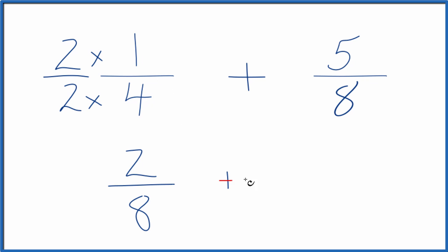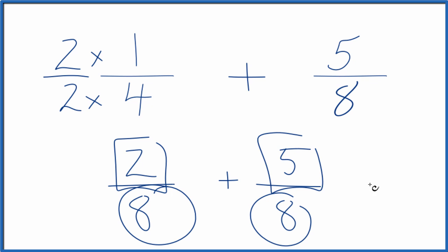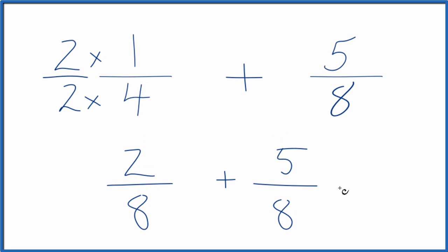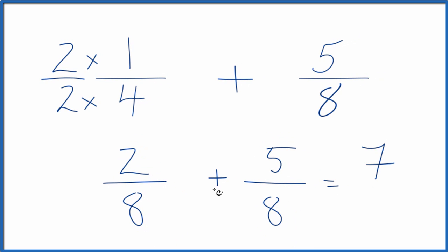But now I could just bring the 5/8 down. And since the denominators are the same, I can just add the numerators. So 2 plus 5 equals 7. And then we just bring the 8 across, 7/8. So 1/4 + 5/8 equals 7/8.